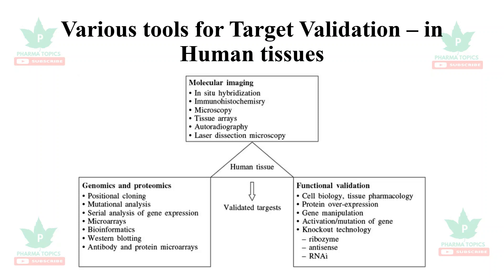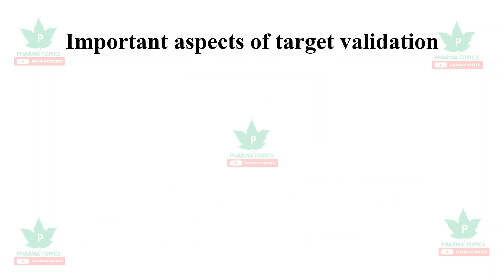Functional validation is achieved through cell biology, tissue pharmacology, protein overexpression, gene manipulation, activation mutation of a gene, knockout technology, ribosomes, antisense, and RNA interference.